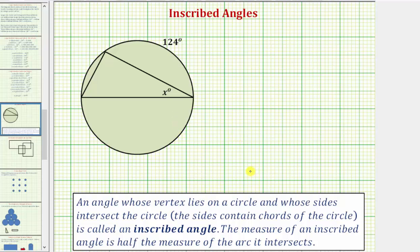So let's review the definition of an inscribed angle. An angle whose vertex lies on a circle and whose sides intersect the circle is an inscribed angle. The measure of an inscribed angle is half the measure of the arc it intersects.